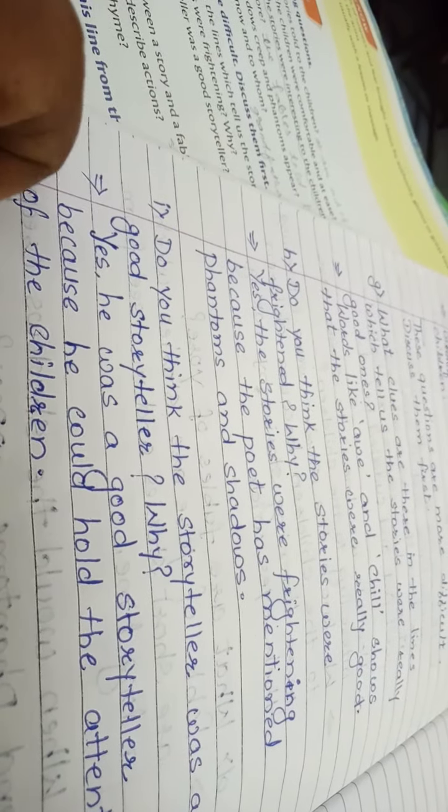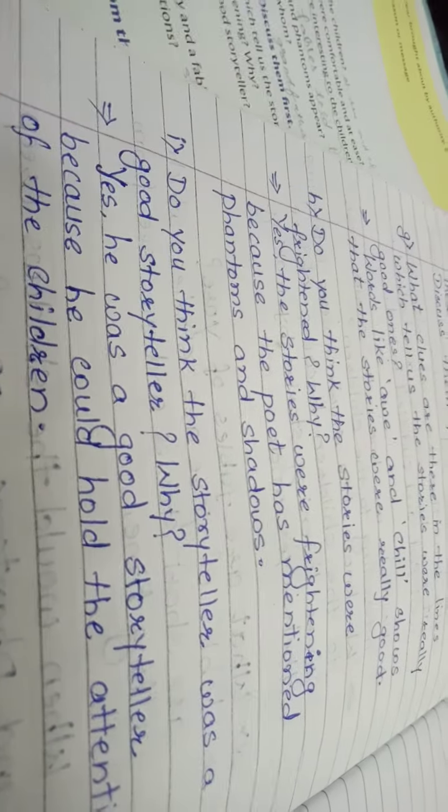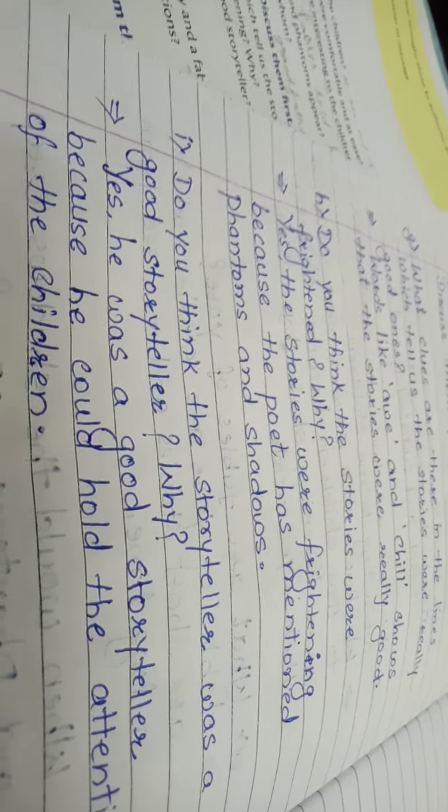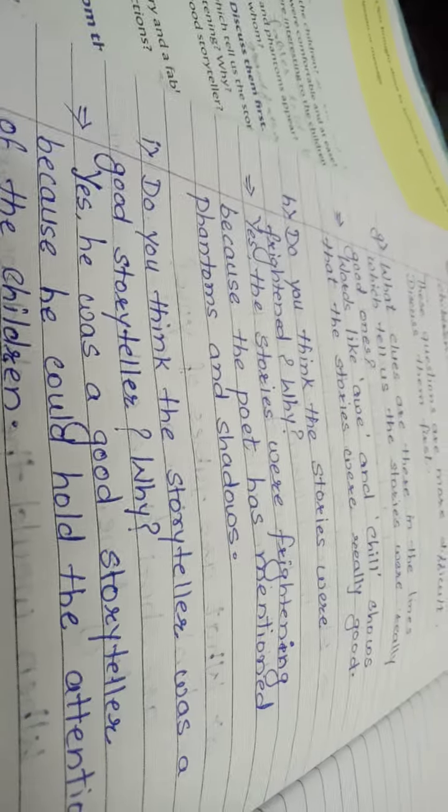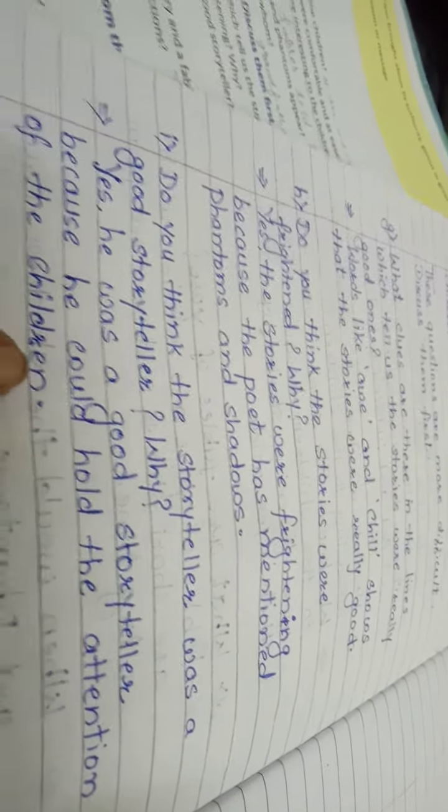Toh jho bata raha hai aur bachche dhyaan se sun raha hai iska matlab kya hai? Kya uski story mein kuch aisa acha hai? Haini na? Jho us tarikay se jho acha tarikay se bata raha hai woh story. Woh bachche ko bohot pasand hai. Yes. He was a good story teller because he could hold the attention of the children.